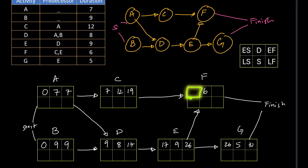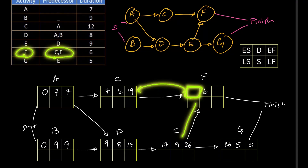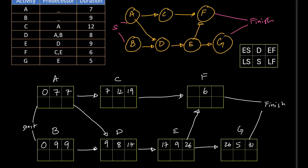The ES box of F has two options: 19 from C or 26 from E. Since F starts after the completion of both C and E, the highest number is written in the ES box of F. 26 is the highest, and 26 plus 6 equals 32. We have successfully completed the upper box — the forward pass.